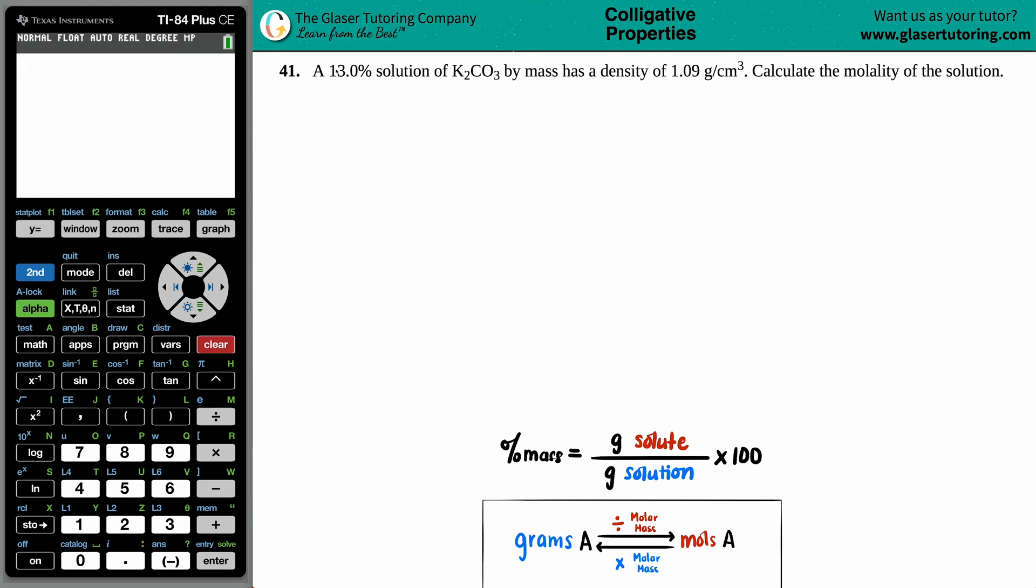Number 41. A 13.0% solution of K2CO3 by mass has a density of 1.09 grams per centimeter cubed. Calculate the molality of the solution.